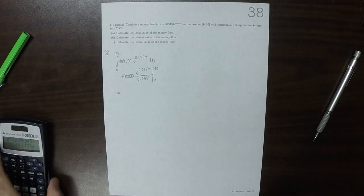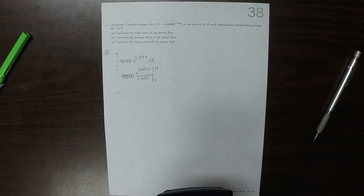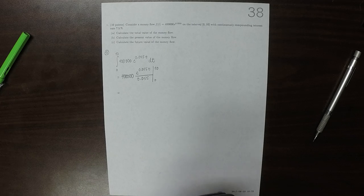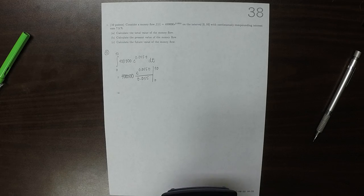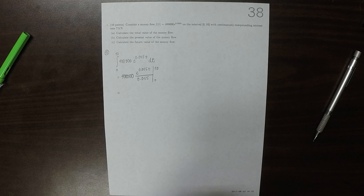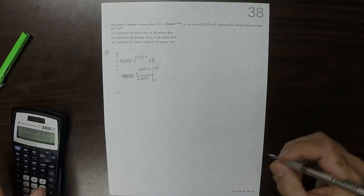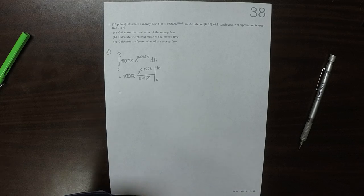That's something that we can just plug in. So 400,000 over 0.055 times exponential of 0.055 times 10, and then I'll go ahead and do a subtraction, minus 1.